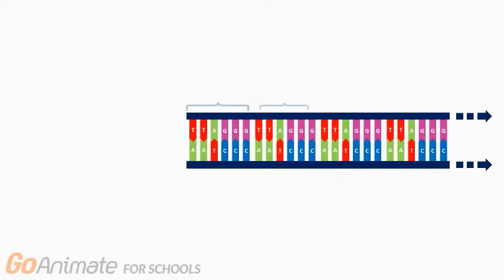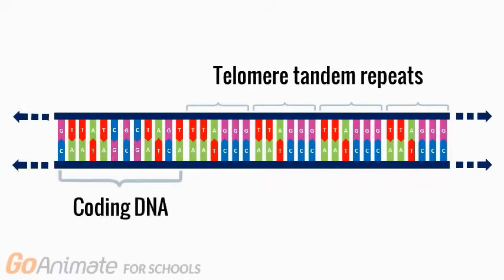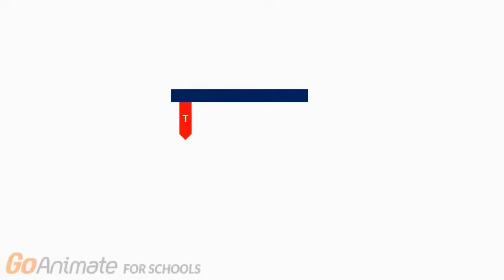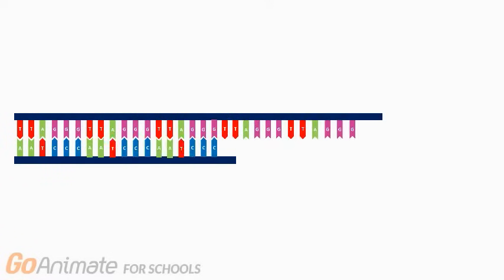Telomeres exist at the ends of strands in the form of tandem repeats, which serve as a disposable buffer to protect gene-rich coding DNA. Telomeres have a specific sequence, which is TTAGGG, paired with the complementary strand AATCCC.